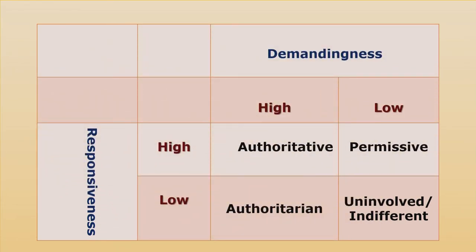So far we have talked about four types of parenting style given by Baumrind: authoritarian, authoritative, permissive, and uninvolved parenting style. Looking at this picture in terms of demandingness and responsiveness with respect to these four parenting styles — when it comes to authoritative parenting style, they are high in demandingness, meaning they have expectations from their child, and at the same time their responsiveness is also high, meaning they give full cooperation and satisfy the needs of the child.